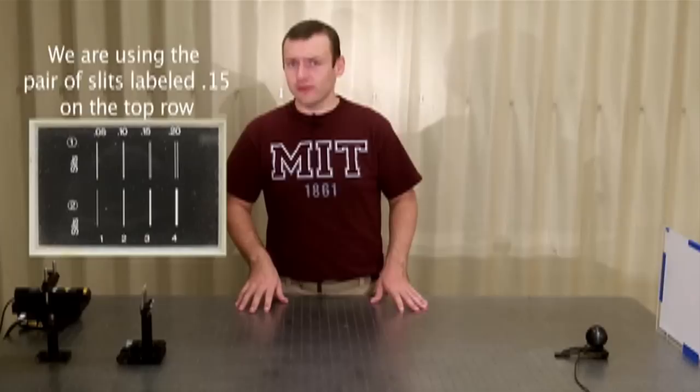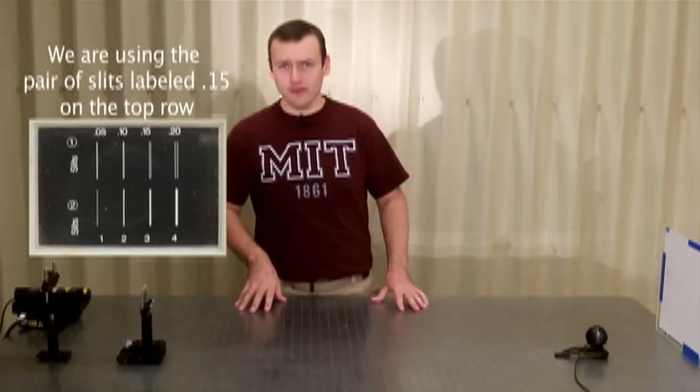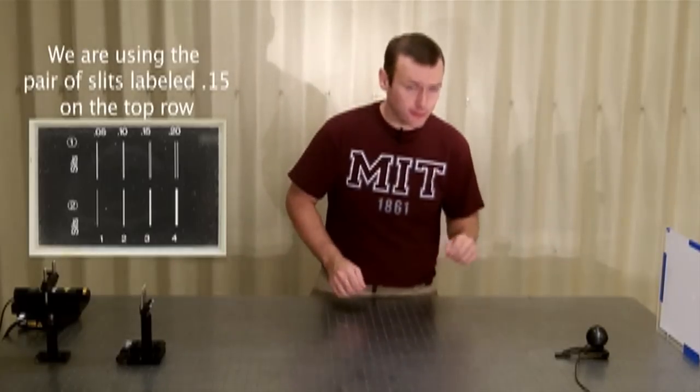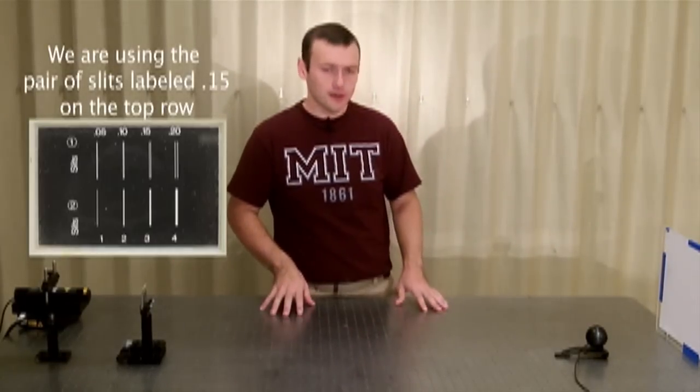We have a laser shining light onto a pair of identical slits. These are rectangular openings in a transparency. After shining through the slits, the light propagates some distance to a screen where we can observe the resulting pattern. We have a webcam set up so that you can see what's happening on the screen.